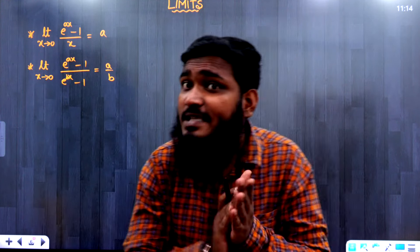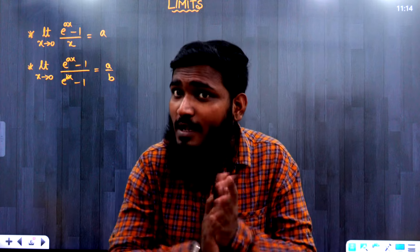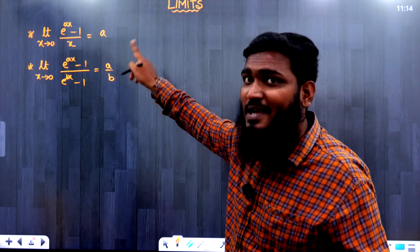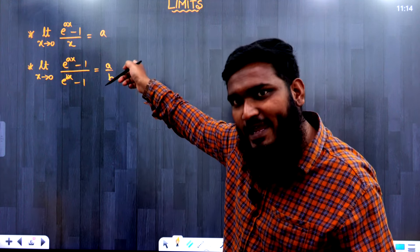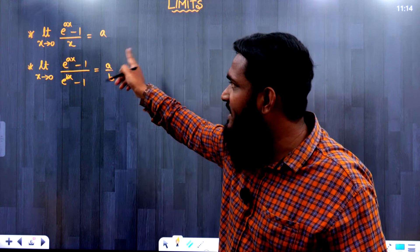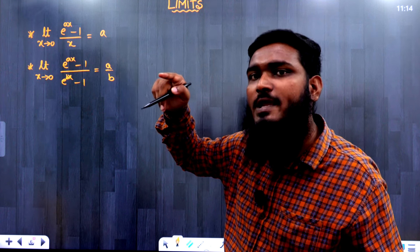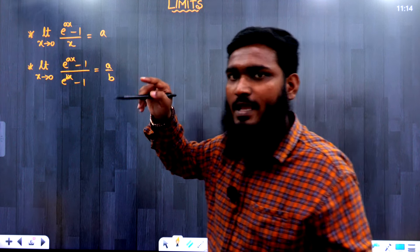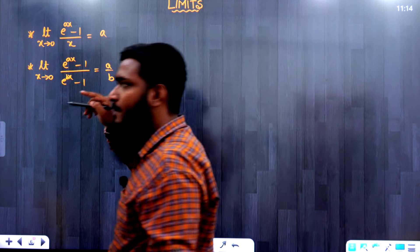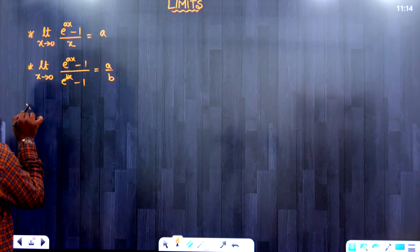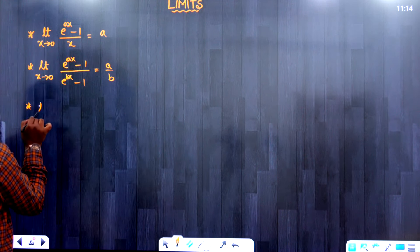So the first important formula: e^(ax) minus 1 by x equals a. Similarly, e^(ax) minus 1 by e^(bx) minus 1 equals a by b. Now let us see the next part.